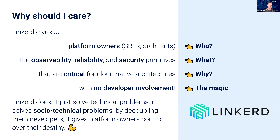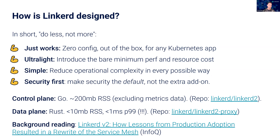Linkerd gives developers these observability, reliability, and security benefits without having to write new code or interrupt their schedules. It's there to solve technical problems but also the social problems — like how do you get developers to use this, or when there's an issue, how do you get past someone blaming DNS or the network and instead show common data so you can quickly reach a resolution.